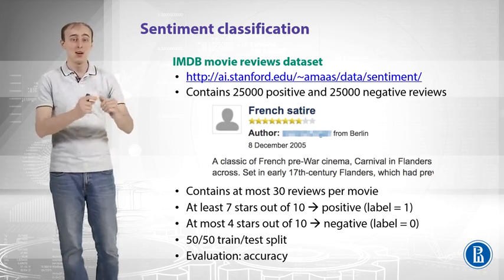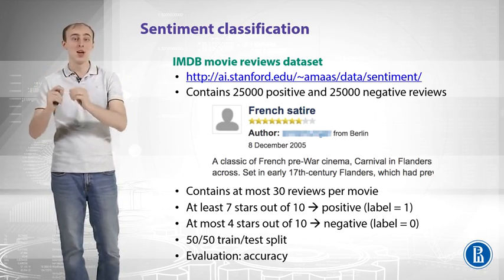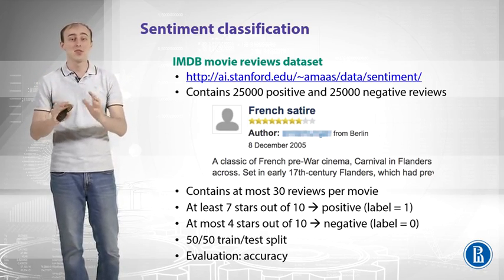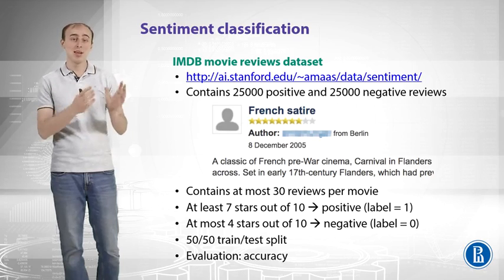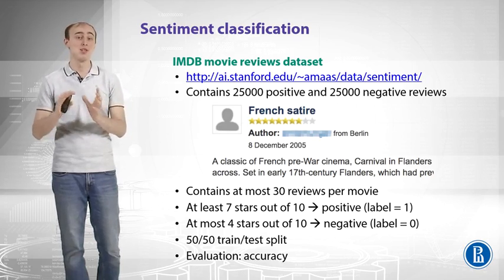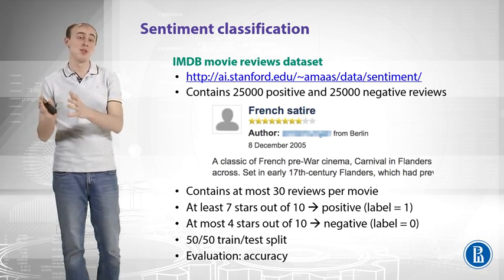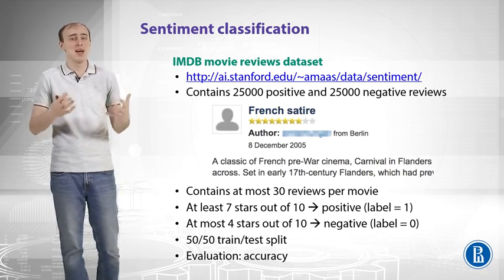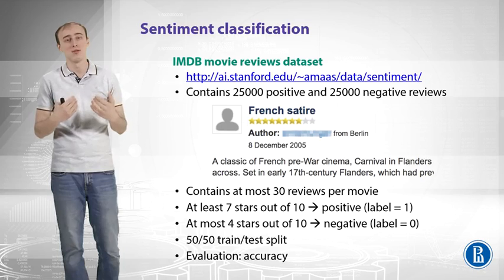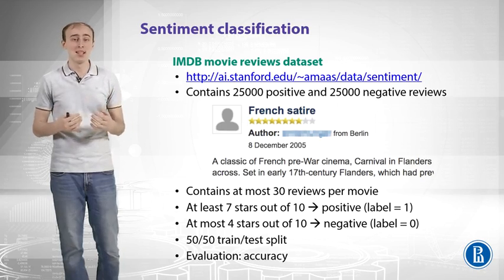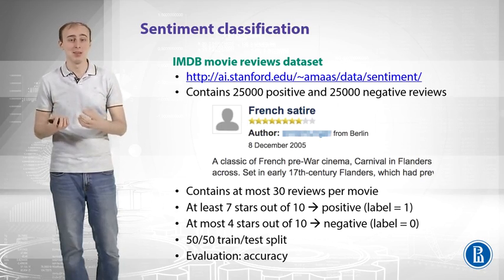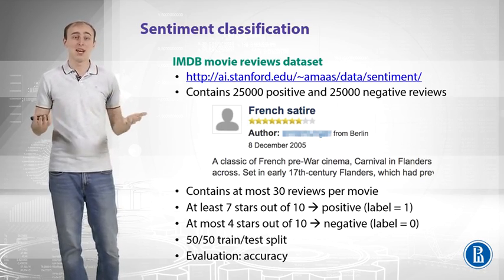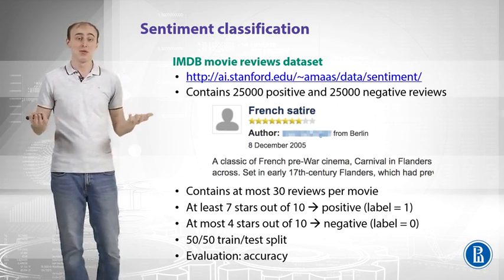Because you have a text and a number of stars, you can think of stars as sentiment. If a review has at least seven stars, you can label it as positive sentiment. If it has at most four stars, that means it's a bad movie for that person, and that is a negative sentiment. That's how you get a dataset for sentiment classification for free.